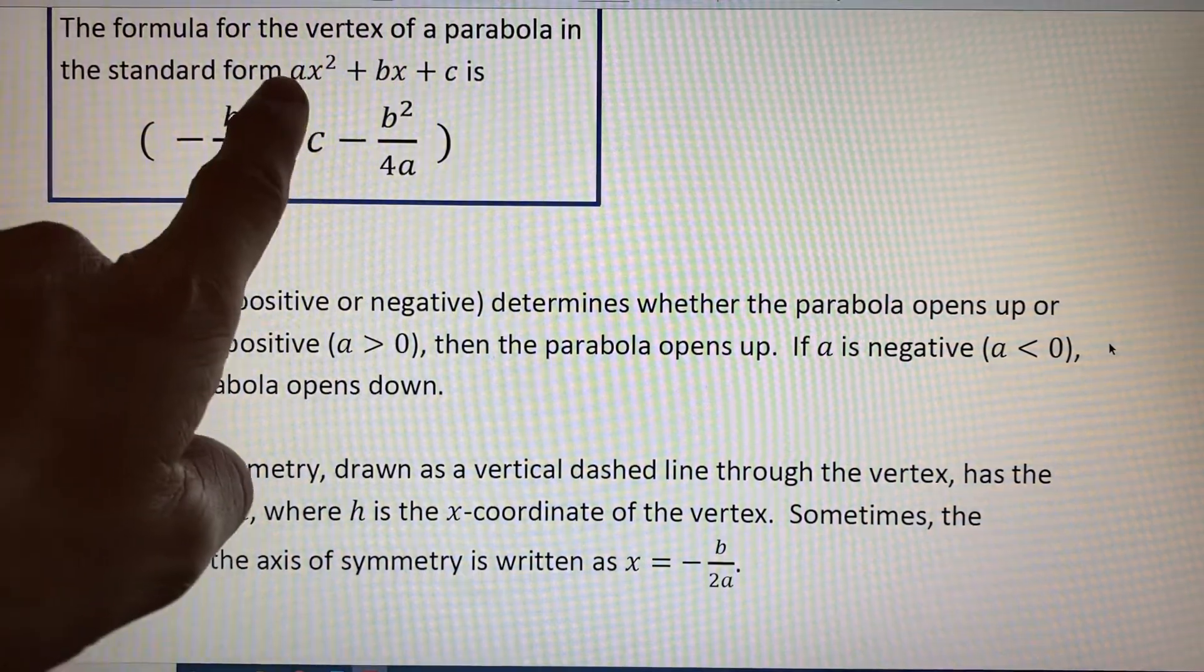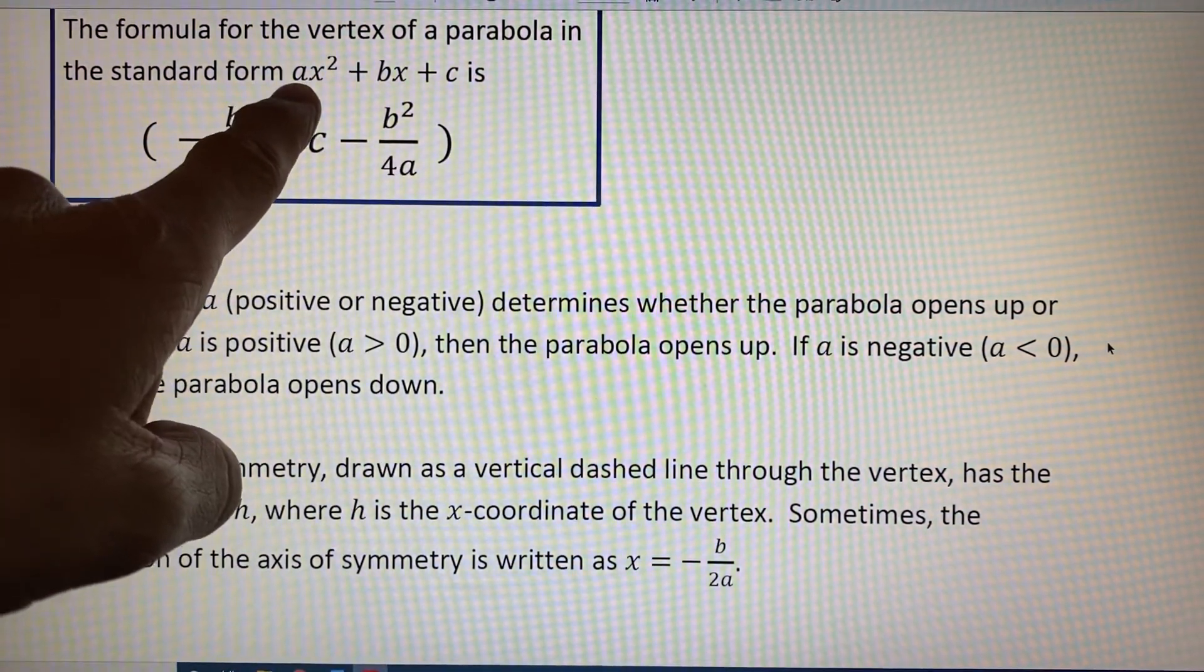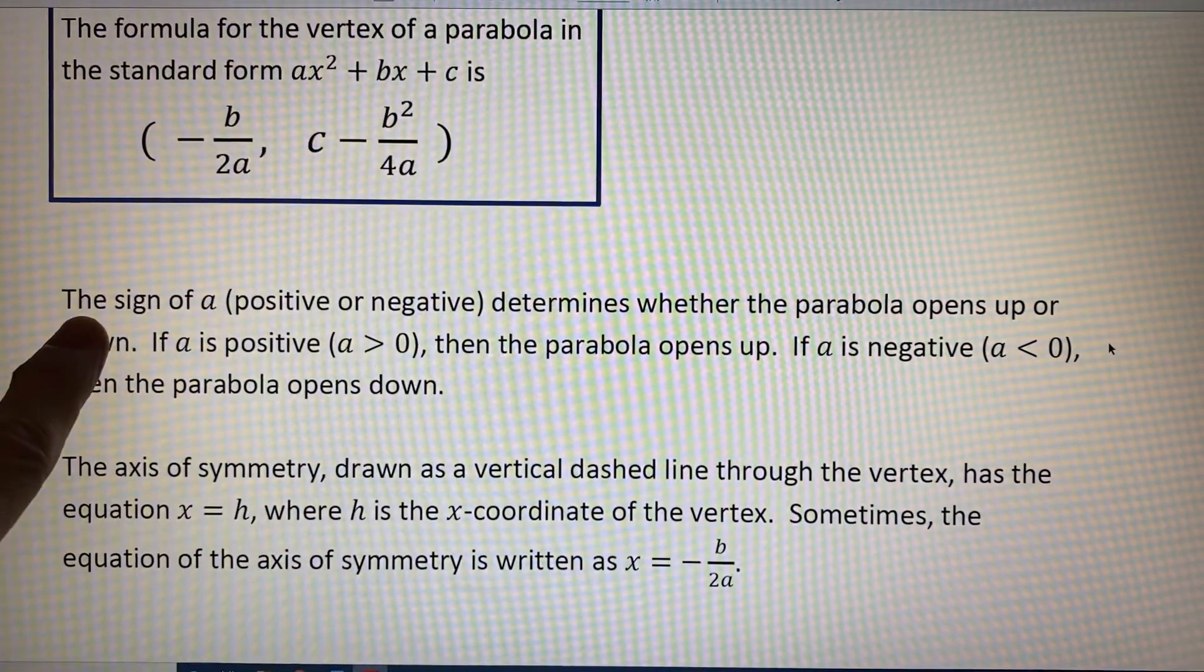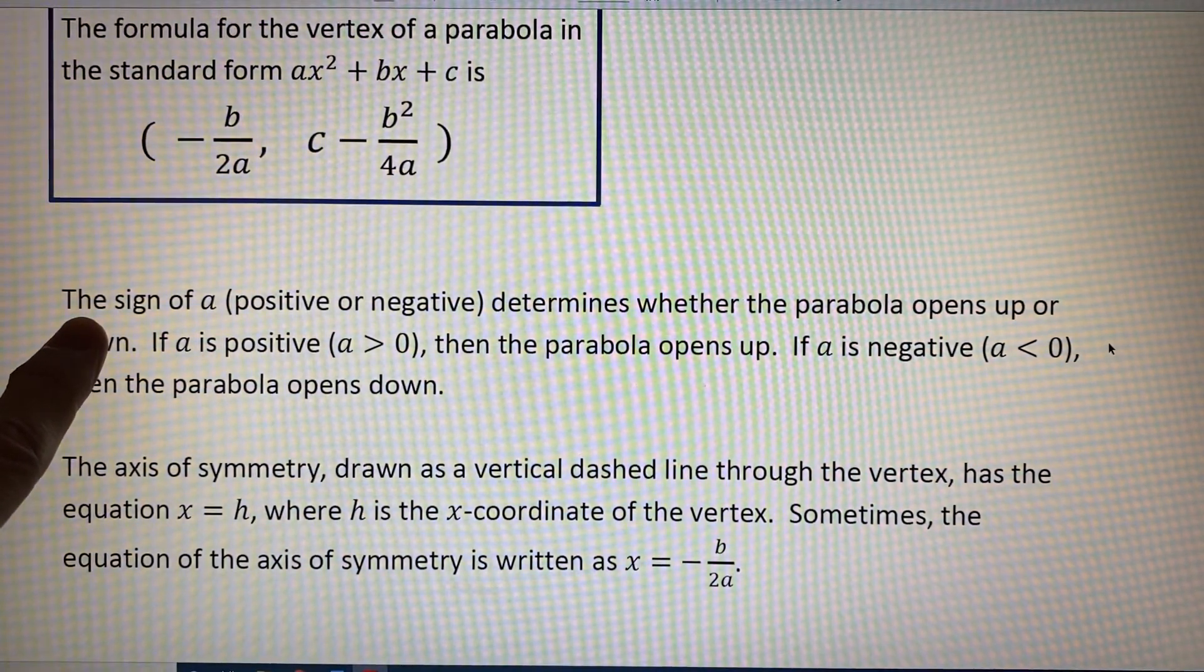Now, when you have a parabola in this form, a, which is the coefficient of the variable squared term, gives you information about the shape of your parabola.